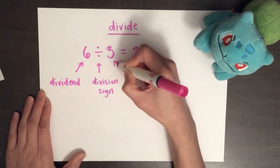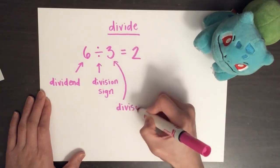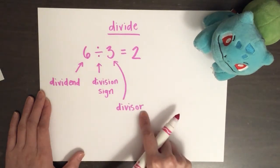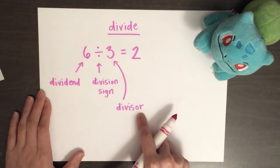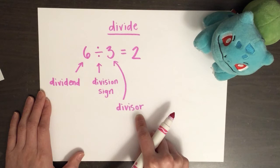This number over here is called the divisor. Repeat after me. Divisor. The divisor is the number of groups.